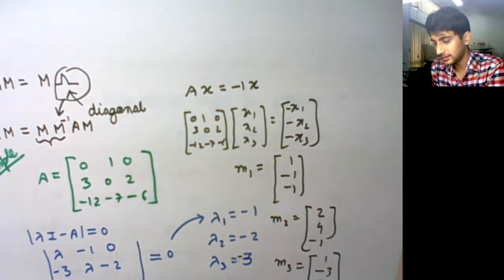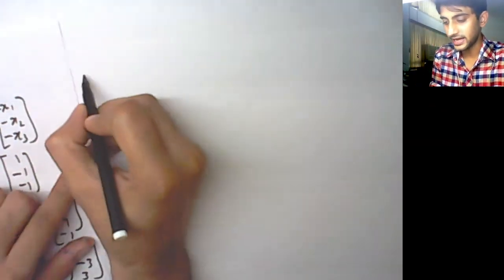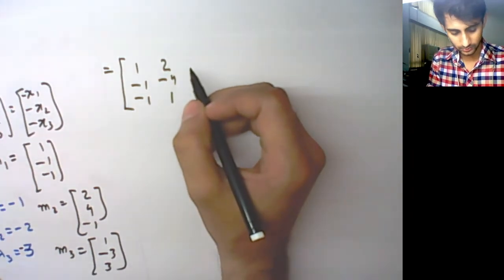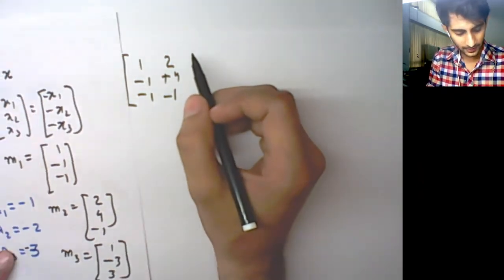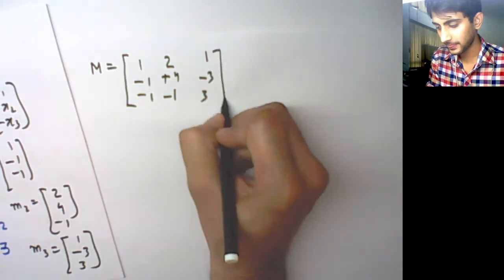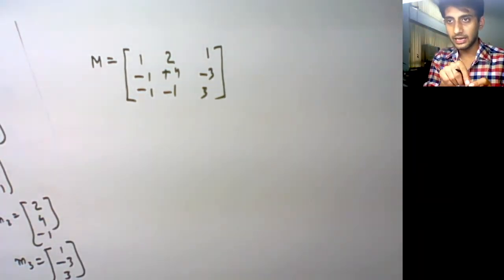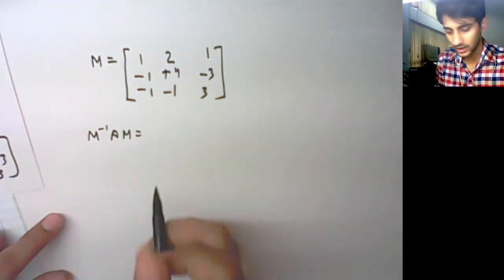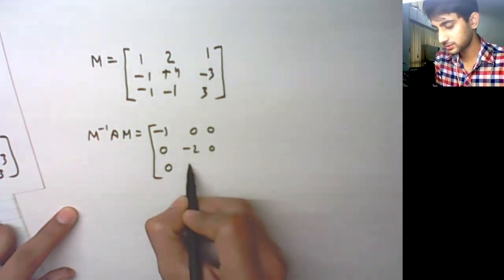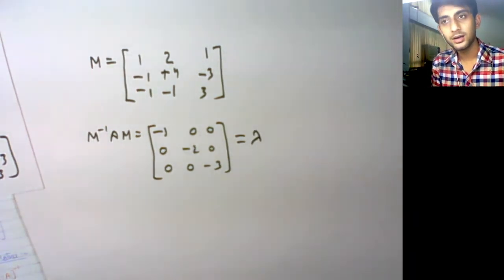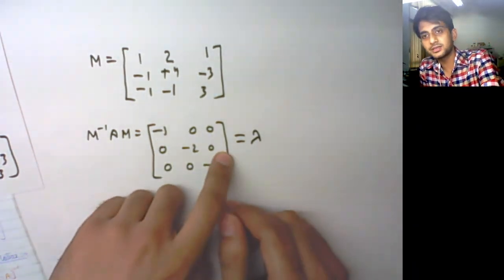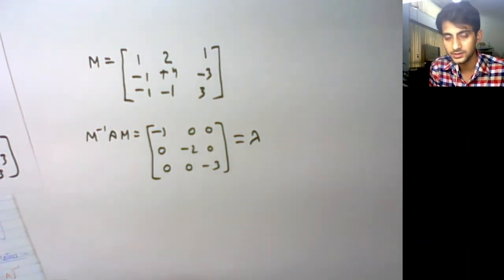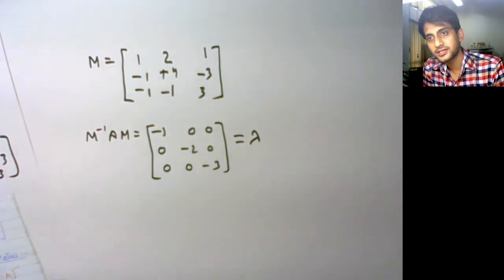With m₁, m₂, m₃ known, M = [[1,2,1],[−1,4,−3],[−1,−1,3]]. Computing M⁻¹AM using MATLAB or another tool gives the diagonal matrix Λ = diag(−1, −2, −3), confirming the eigenvalues. This diagonal matrix speaks about the state of the system — specifically its stability. We will explore how the nature of eigenvalues indicates stability in a 2×2 system in the next part of the video.